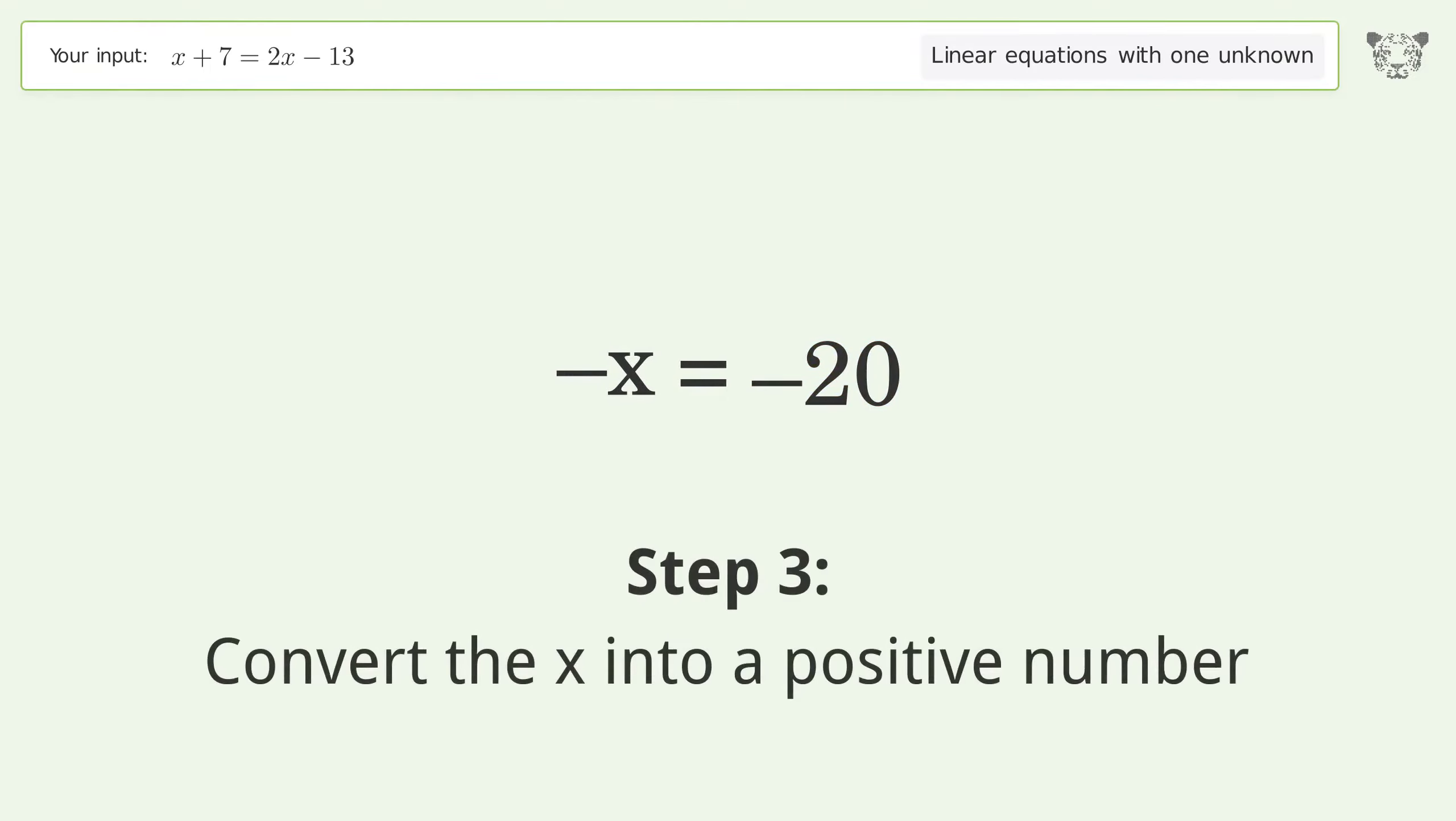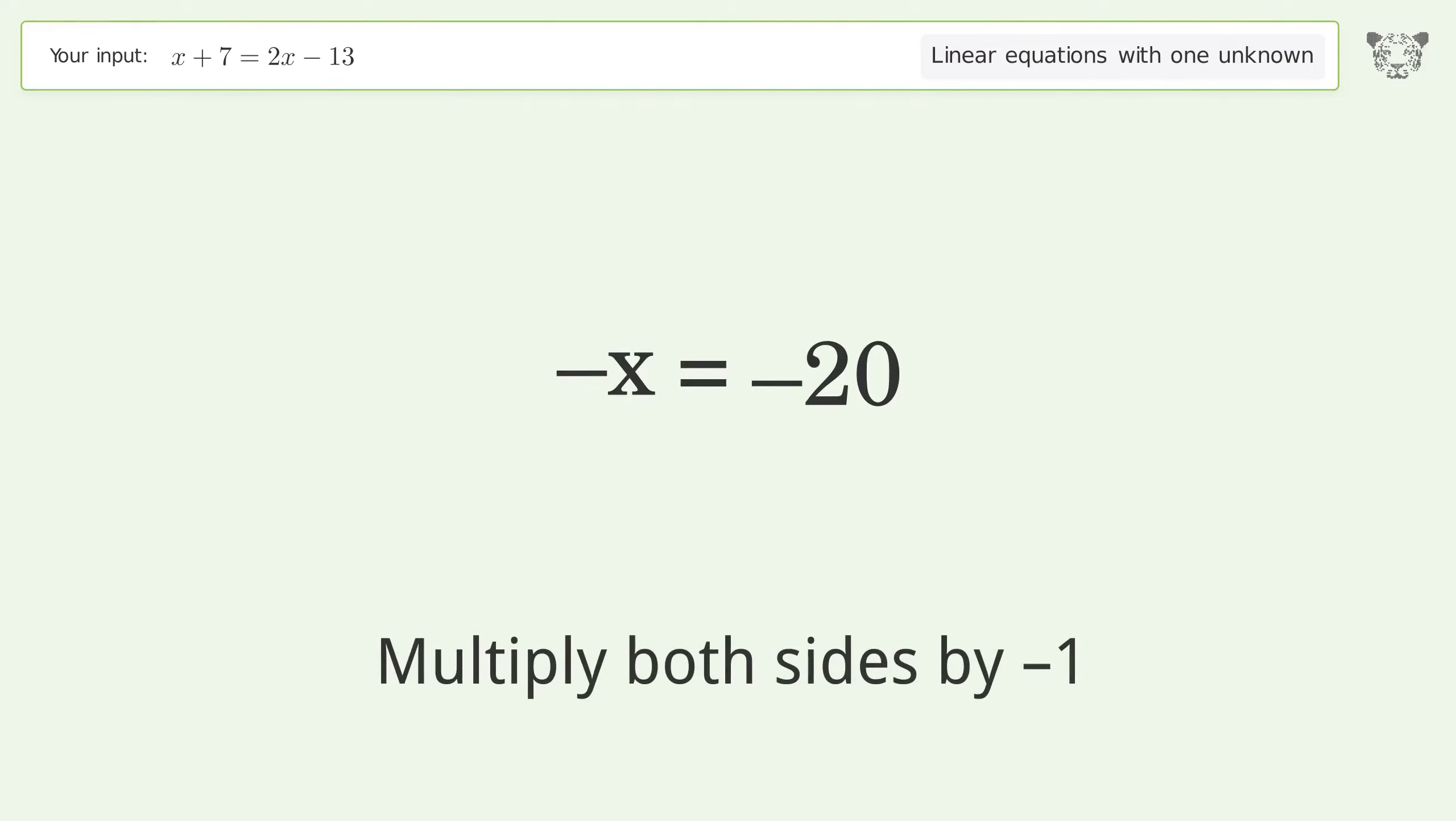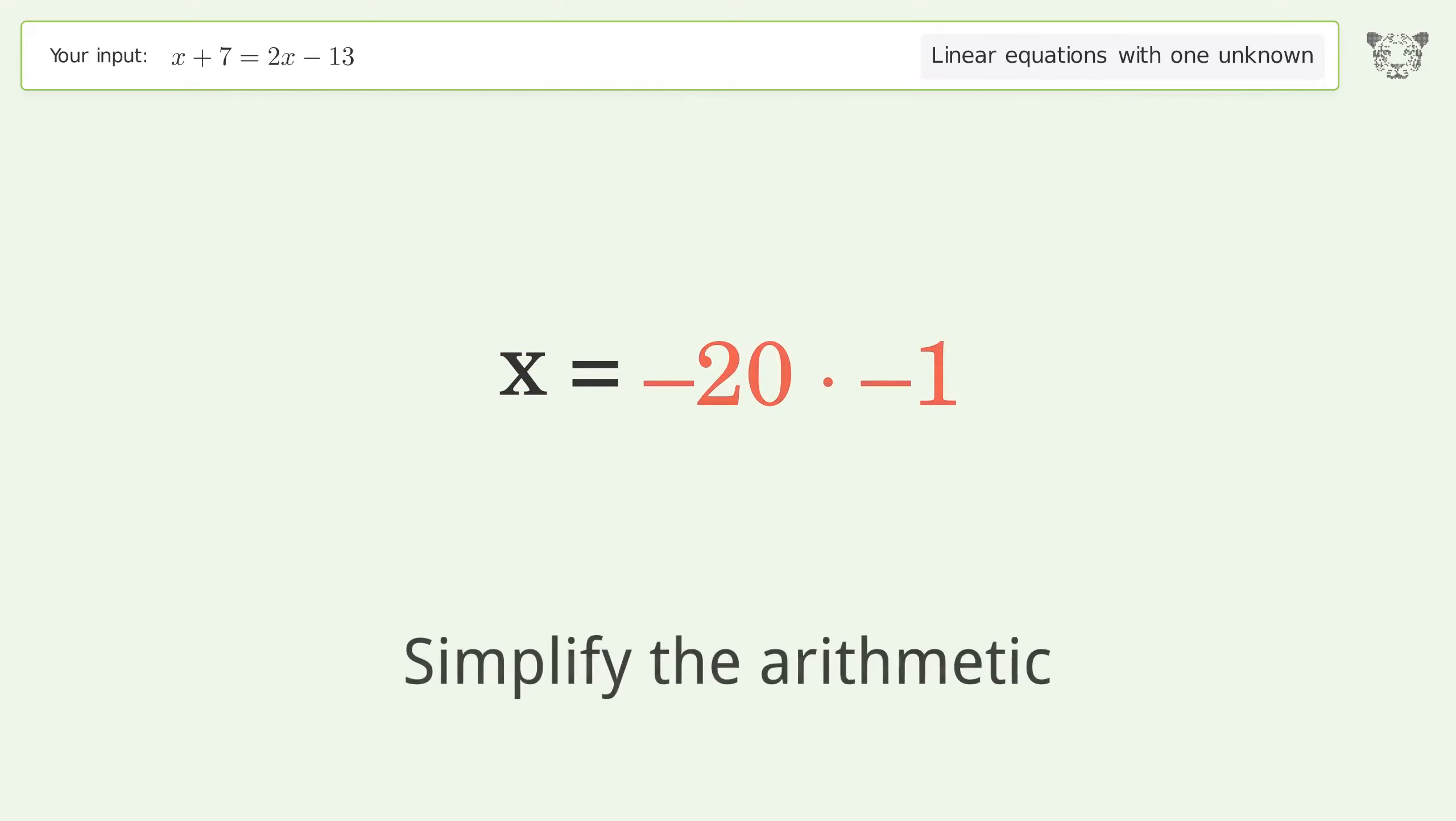Convert the x into a positive number. Multiply both sides by negative 1. Remove the 1s. Simplify the arithmetic.